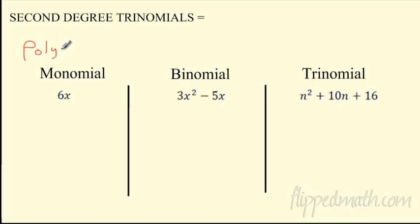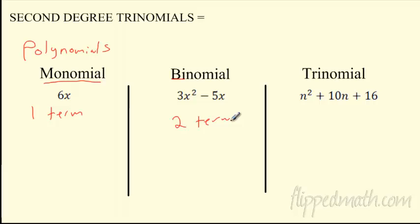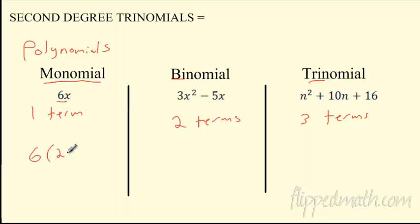If you think back, we talked about polynomials earlier this year. We have a monomial — that is just one term. Like a bicycle has two wheels, a binomial has two terms. And then 'tri' is three, so a trinomial is something with three terms. To be a term, it just means you're a number or a letter or both — a number and/or a variable.